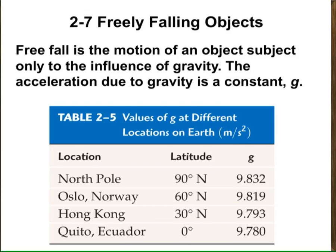The rate of change of the velocity is constant, and this constant on the surface of earth is known as the gravitational acceleration. It is a special kind of acceleration, and it is constant on the surface of earth everywhere, almost.